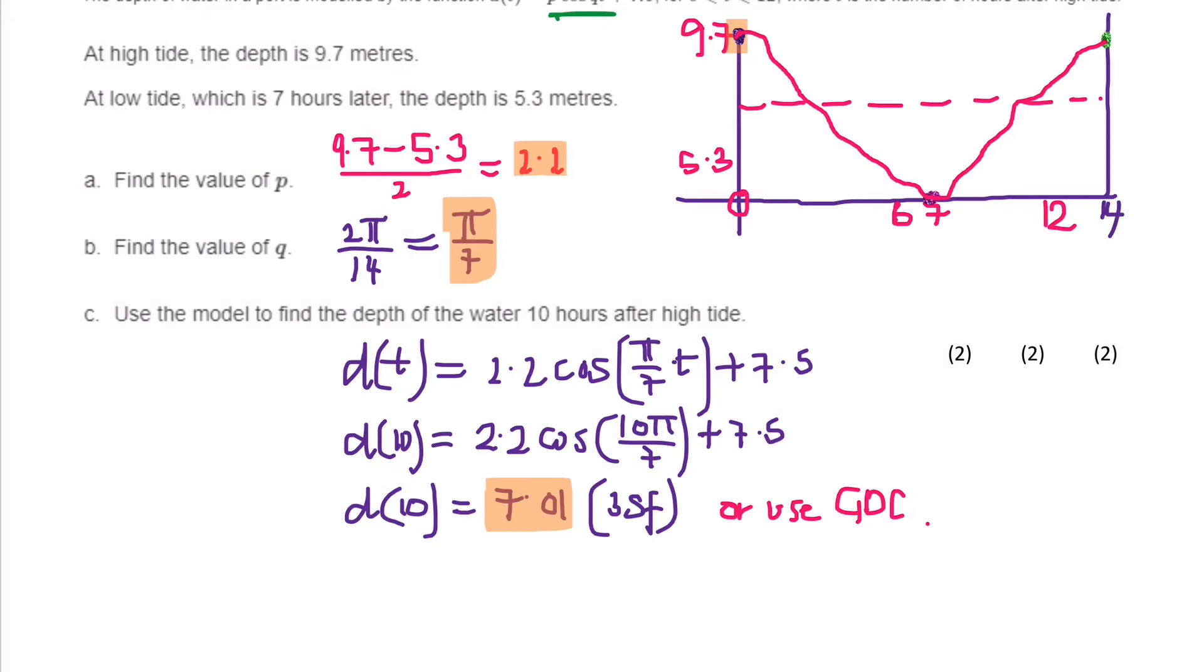So 9.7 is the high tide, the low tide is 5.3. So subtract and divide by 2, that gives me 2.2. So that means that the cos function up here starts at the high tide, then it goes all the way down to the low tide which is 5.3. So really my curve should have went to there, should have came to here, and then it should go back up like that.